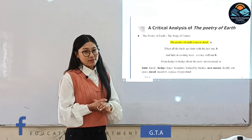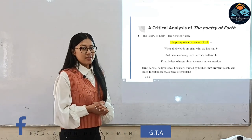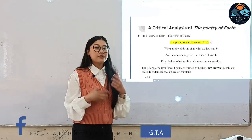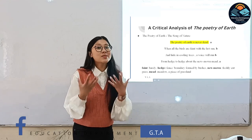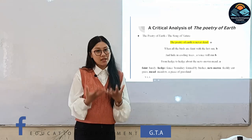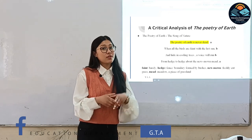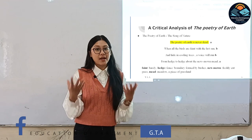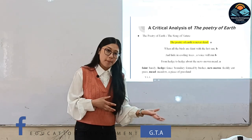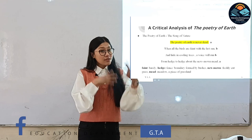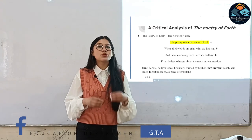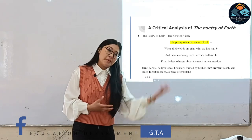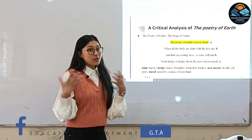Now for the main topic — the critical analysis of 'The Poetry of Earth.' 'The Poetry of Earth' means the song of nature, the music presented by nature. In this poem, John Keats tries to highlight the various sounds produced by tiny objects like the grasshopper and the cricket, presenting these sounds as the natural sound of the earth through various seasons — summer and winter.